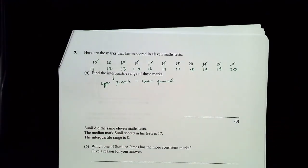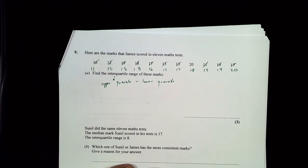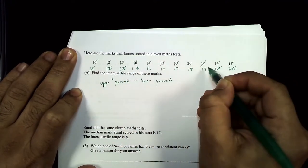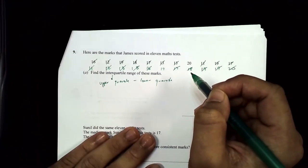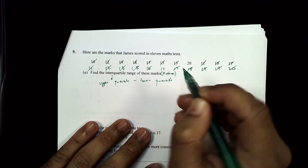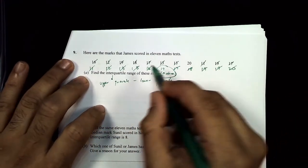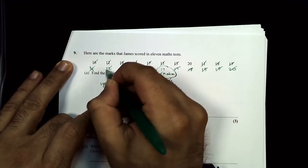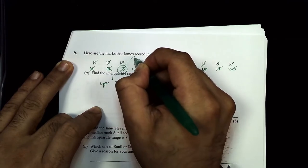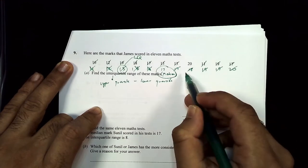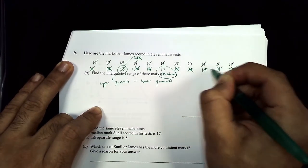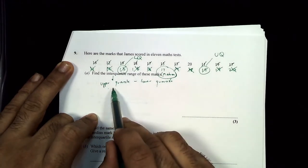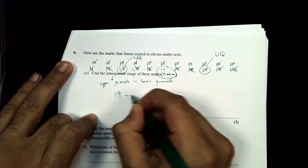The full ordered list ends with 20. To find the median, cross out from either side — after five crosses each side, the middle value is 17. Now to find the lower quartile, apply the same crossing-out process to the lower half; the lower quartile is 13. For the upper quartile, apply the same to the upper half; the upper quartile is 19.